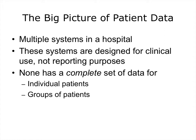Consider the various information systems you've learned about so far. A hospital will likely have an electronic health record system, as well as specialized departmental systems for laboratory, diagnostic imaging, pharmacy, nutrition services, billing, anatomic pathology, and so on. Each of these systems is designed and intended for clinical use — in other words, patient care — and so they capture specific data about the patient. However, none of these systems has a complete set of data for any individual patient or for a group of patients, such as all patients who were admitted in January with a certain diagnosis.